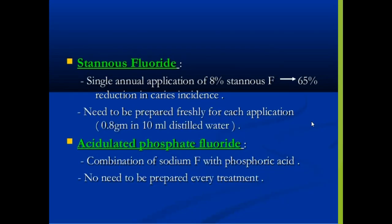Stannous fluoride and acid-related phosphate fluoride are also used as fluoride varnishes. Stannous fluoride is a single annual application of 8% stannous fluoride which can reduce 65% caries incidence, but needs to be prepared freshly for each application — 0.8 grams in 10 ml distilled water. In the case of acid-related phosphate fluoride, a combination of sodium fluoride with phosphoric acid is used; there is no need to prepare it fresh every treatment.